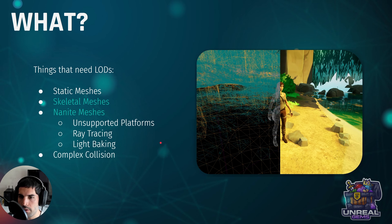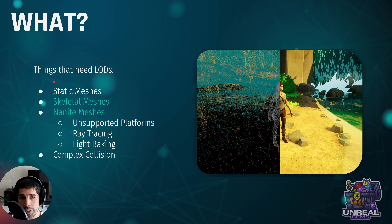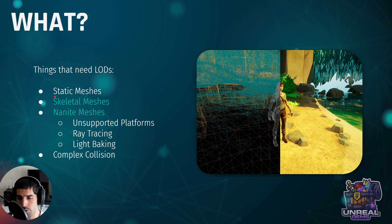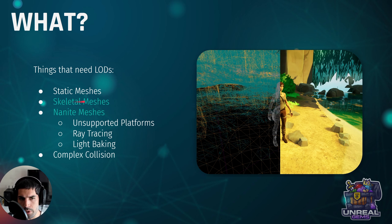So now we are wondering what needs LODs in Unreal Engine. You can probably guess that static meshes, for sure. You can probably guess also that skeletal meshes — especially crowds, if you are trying to do procedural crowds or something like that, a game that has a lot of NPCs — you are going to need LODs for the skeletal meshes also.